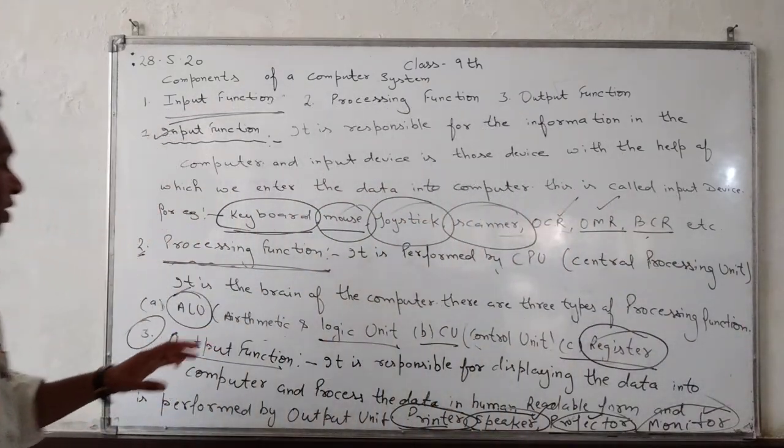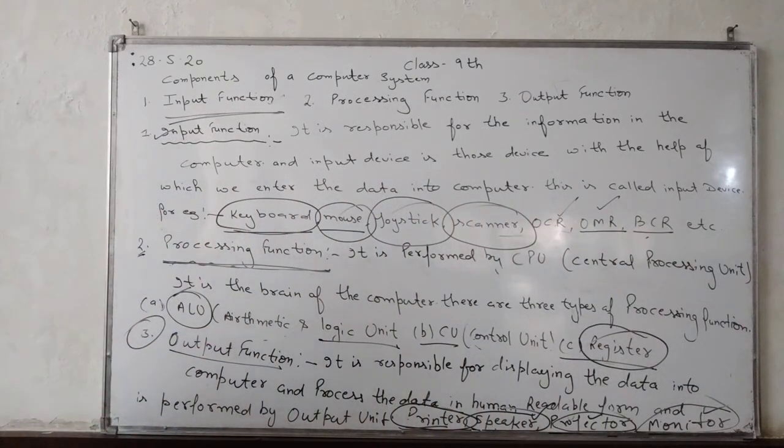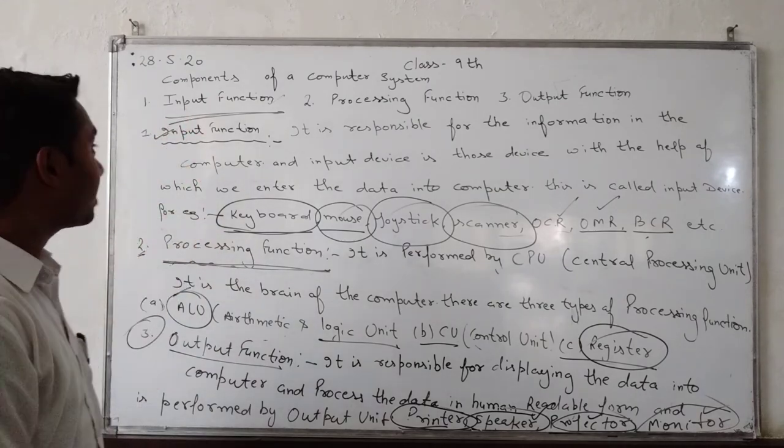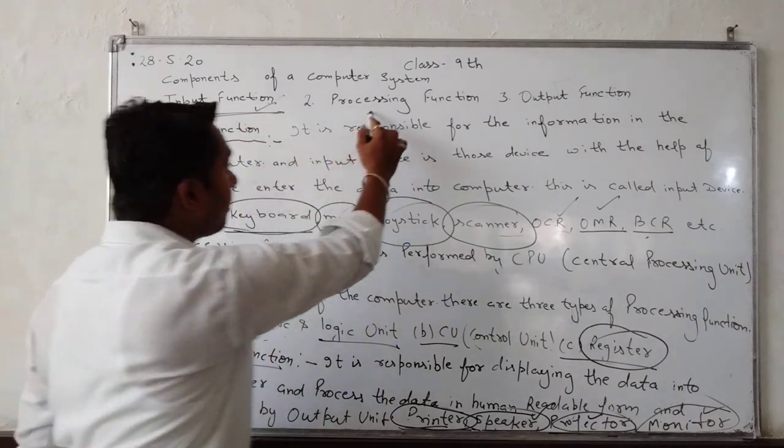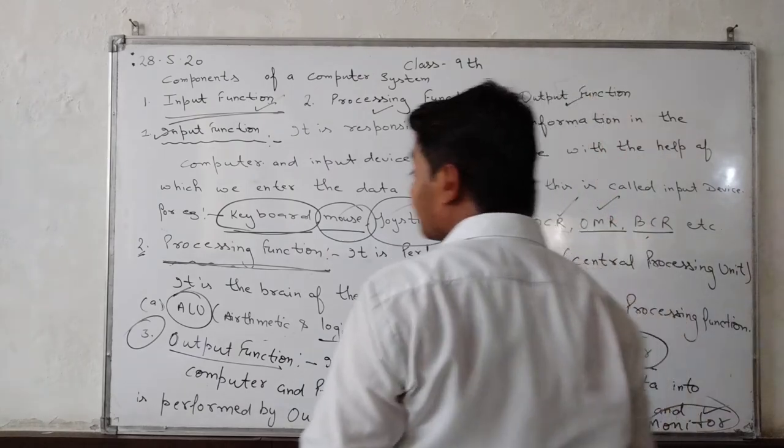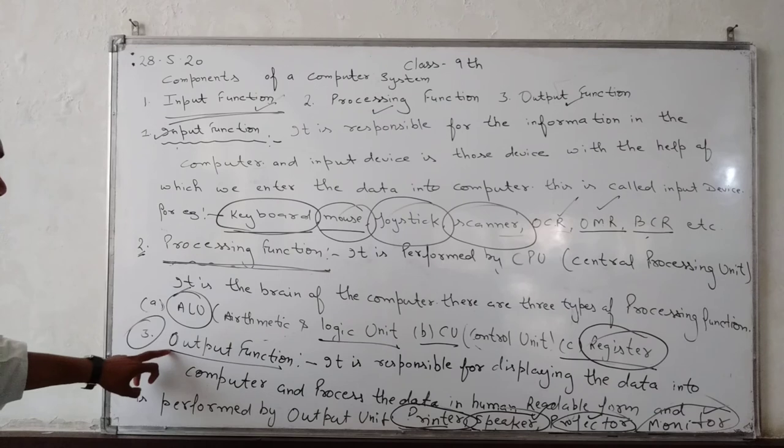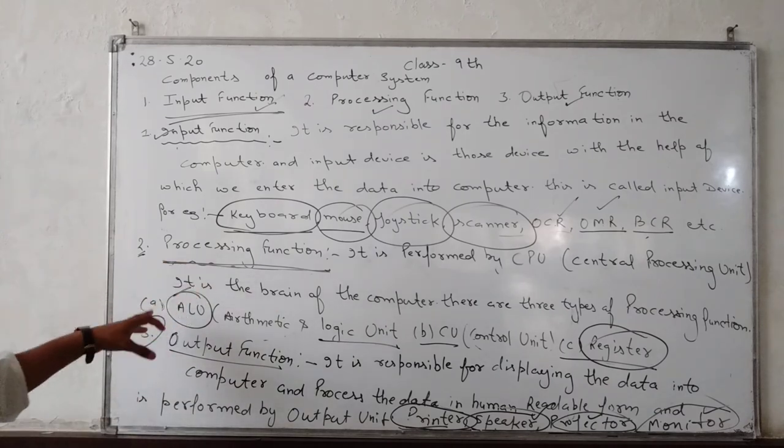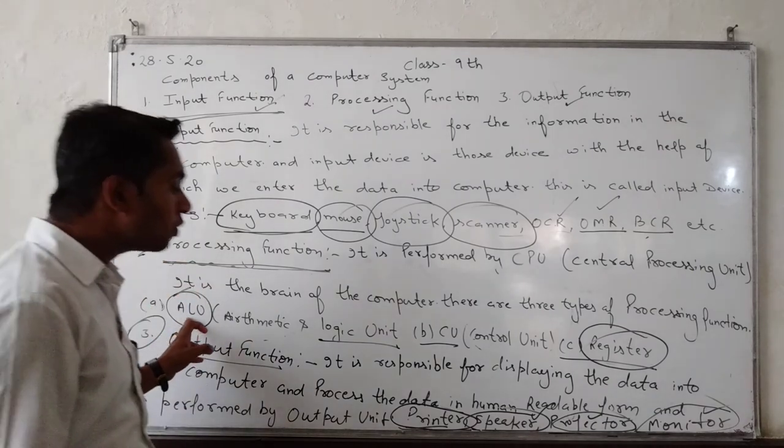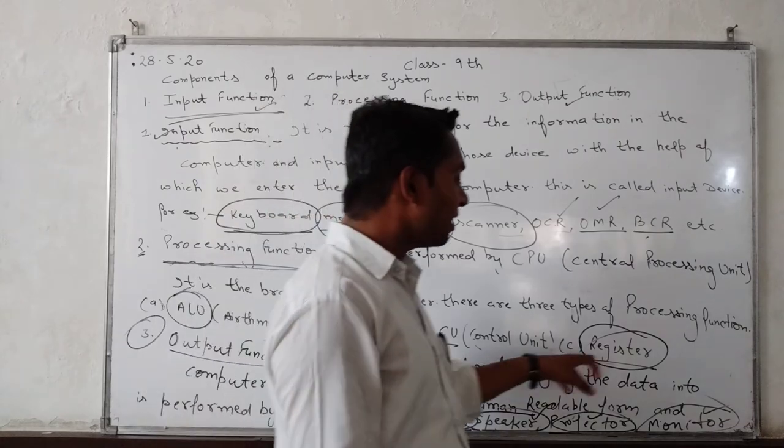Output image components computer system: input function, processing function, output function. Input, processing and output. And processing functions are ALU, CU and this function.